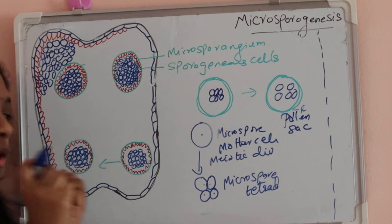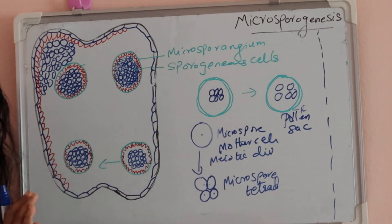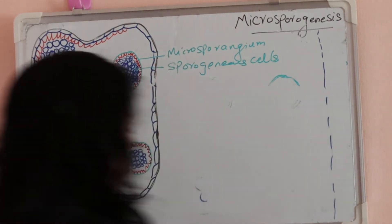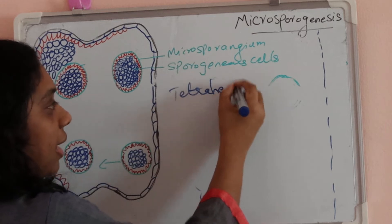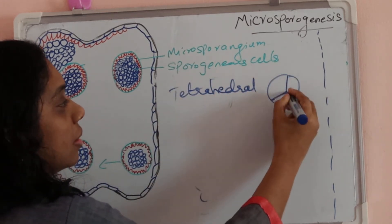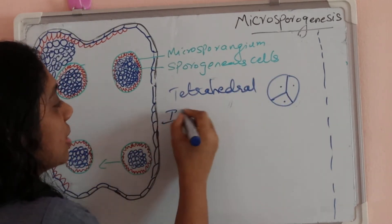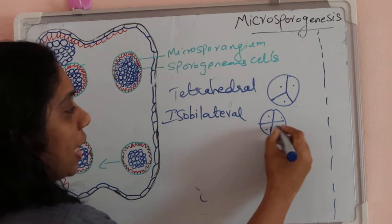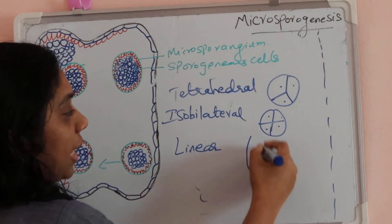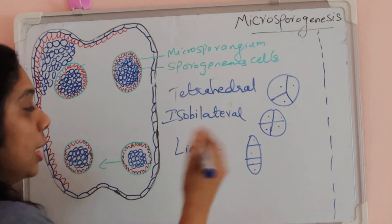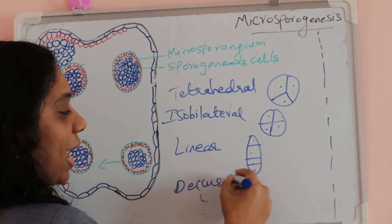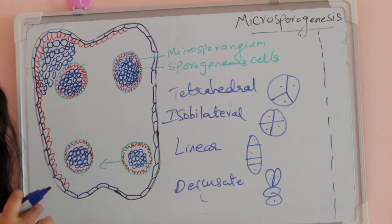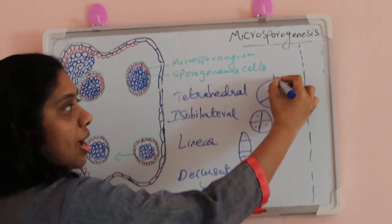The four haploid cells unite together to form the tetrad. In plant cells, different types of tetrads are seen: tetrahedral — where three are visible and one is at the back; isobilateral — where all four can be seen; linear; and decussate or T-shaped. The four haploid cells fuse together and form a tetrad. In angiosperms, the most common type of tetrad is tetrahedral.